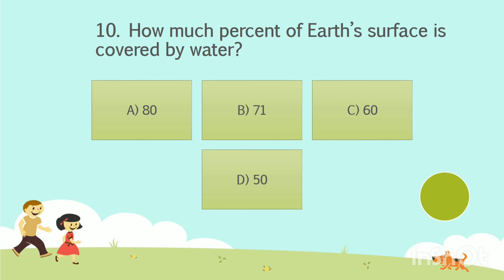Question No. 10. How much percent of the earth's surface is covered by water? Option A: 80. Option B: 71. Option C: 60. Option D: 50. Your time starts now. The answer is Option B, 71. Shall we go to the next question?